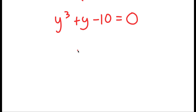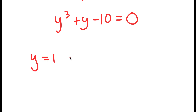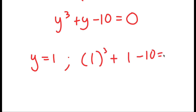What I need to do is first find one solution of y, and then once I have that solution, I can find the remaining solutions. To find that first solution, I'm just going to test values of y. Starting with y equals 1: I have 1 to the power of 3 plus 1 minus 10 is equal to 0. Well, 1 to the power of 3 is 1, 1 plus 1 is 2, 2 minus 10 is negative 8, which does not equal 0. So this does not work.